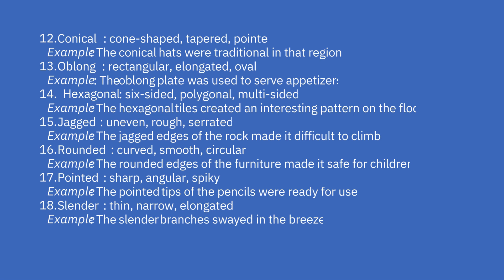13th: oblong — rectangular, elongated, oval. Example: the oblong plate was used to serve appetizers. 14th: hexagonal — six-sided, polygonal, multi-sided. Example: the hexagonal tiles created an interesting pattern on the floor. 15th: jagged — uneven, rough, serrated. Example: the jagged edges of the rock made it difficult to climb.